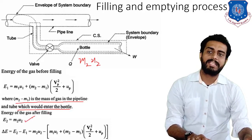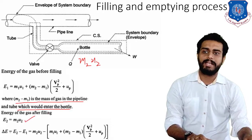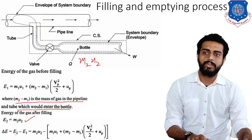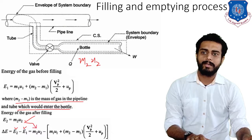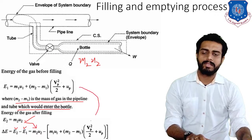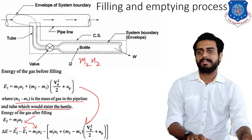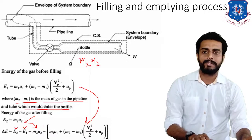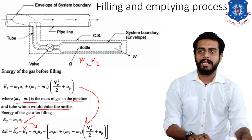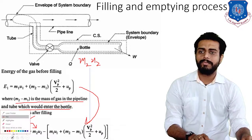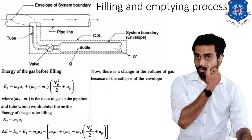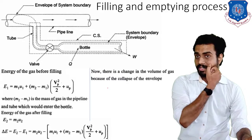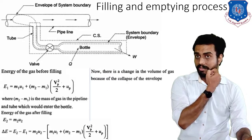If we take the change in energy, delta E = E2 - E1. Substituting the values of E2 and E1, we can write that equation. Further, there is a change of volume of gas because of the collapse of the envelope. The meaning of this is that some work will be done here because of the collapse of the volume of the gas.